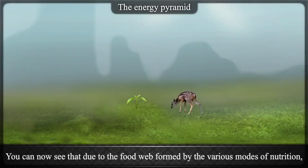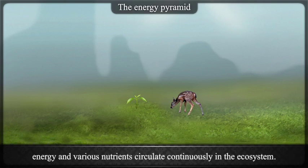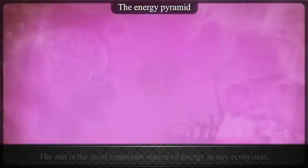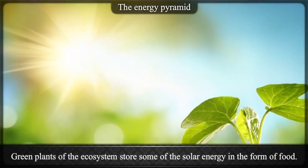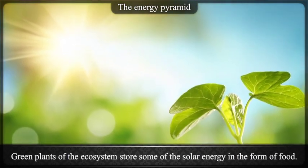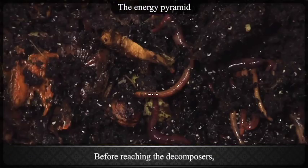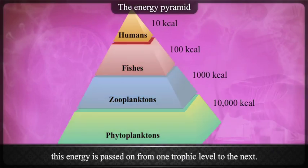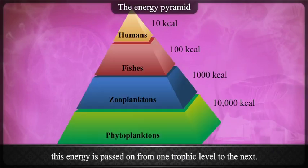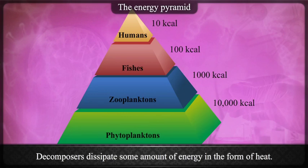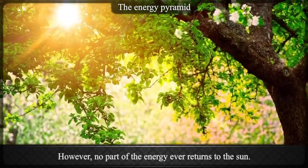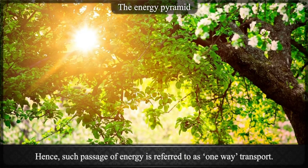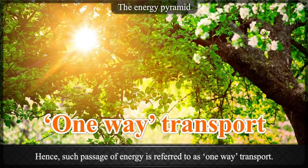Due to the food web formed by the various modes of nutrition, energy and various nutrients circulate continuously in the ecosystem. The sun is the most important source of energy in any ecosystem. Green plants store some of the solar energy in the form of food. Before reaching the decomposers, this energy is passed on from one trophic level to the next. Decomposers dissipate some amount of energy in the form of heat. However, no part of the energy ever returns to the sun. Hence, such passage of energy is referred to as one-way transport.